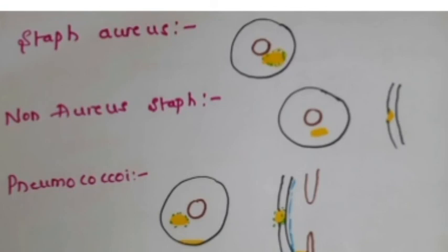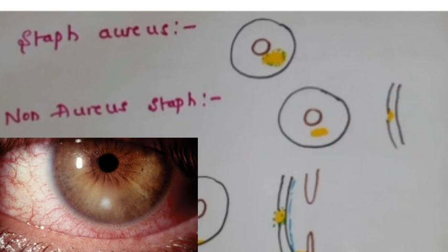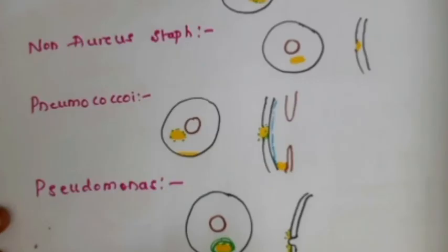When it comes to non-aureus staphylococci - these are coagulase-negative organisms - they cause opportunistic infection in compromised corneas. The ulcer is very superficial, as seen in the cross-section, and is slowly progressive with surrounding clear cornea. The AC reaction is either mild or minimal.